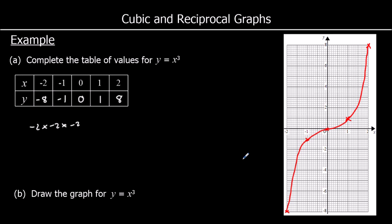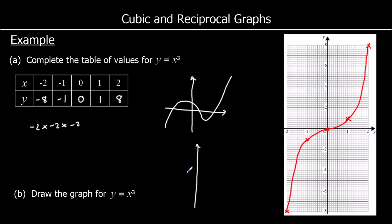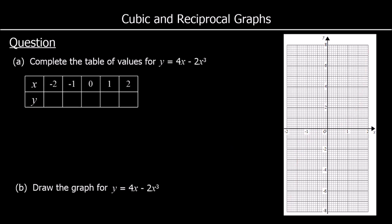A positive x cubed graph goes from the bottom left to the top right. It can make this kind of S-shape and can cross the x-axis up to 3 times, but a positive x cubed will always start bottom left and end top right.